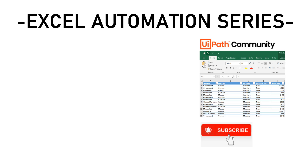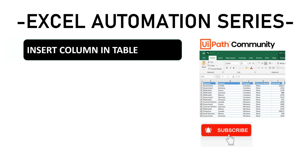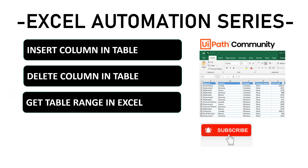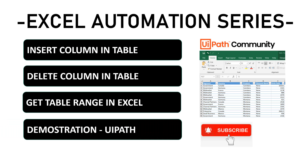Hi everyone, welcome back to the next video in the Excel automation series. Today we are going to discuss how we can insert a column in a table, how we can delete an existing column from a table in UiPath Studio, how we can get the table range which has a pivot in Excel, and how we can get a table range which does not have a pivot in Excel.